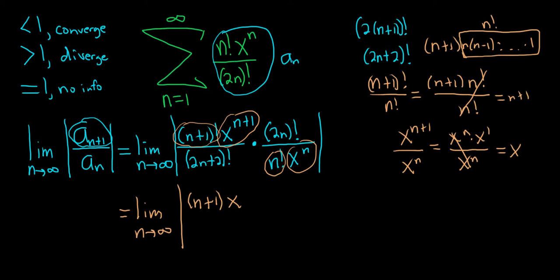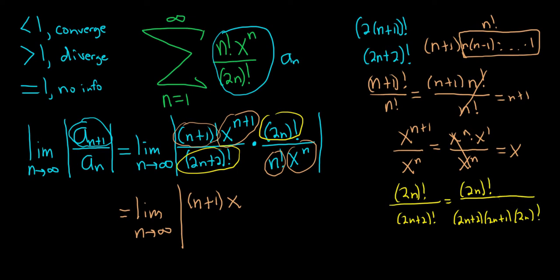Now the last factorial: (2n) factorial over (2n+2) factorial. We keep the top the same and on the bottom subtract 1 repeatedly: (2n+2)(2n+1)(2n) factorial. These cancel, leaving 1 over (2n+2)(2n+1). So on the bottom we have (2n+2)(2n+1).